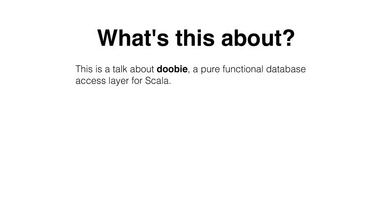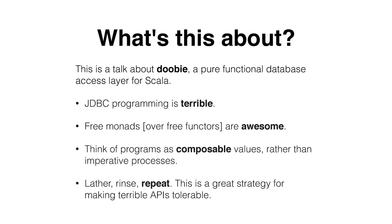So what's this about? This is a talk about Doobie, which is a pure functional database layer for Scala. I've been working on it in my spare time for a couple of years now. We've had some releases, and there are people using it. Today I just want to talk about how it works and why I think it's interesting. First and foremost, JDBC is terrible. This is not JDBC's fault really — it has an impossible task. You cannot abstract over every possible relational database and end up with something satisfying. But this is Scala, so we can improve on it a lot.